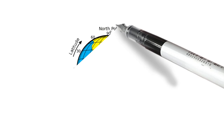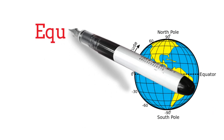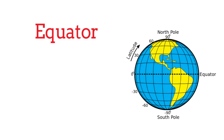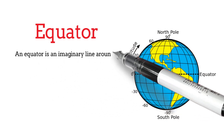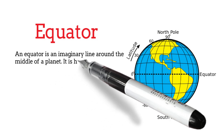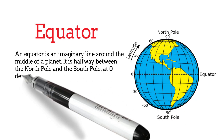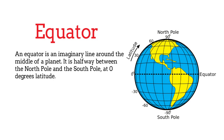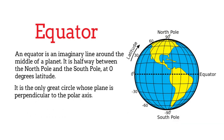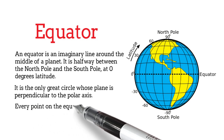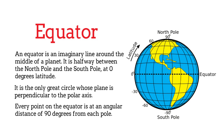Another example of a great circle is the equator. An equator is an imaginary line around the middle of the planet. It is halfway between the North Pole and South Pole at zero degrees latitude. Every point on the equator is at an angular distance of 90 degrees from each pole.